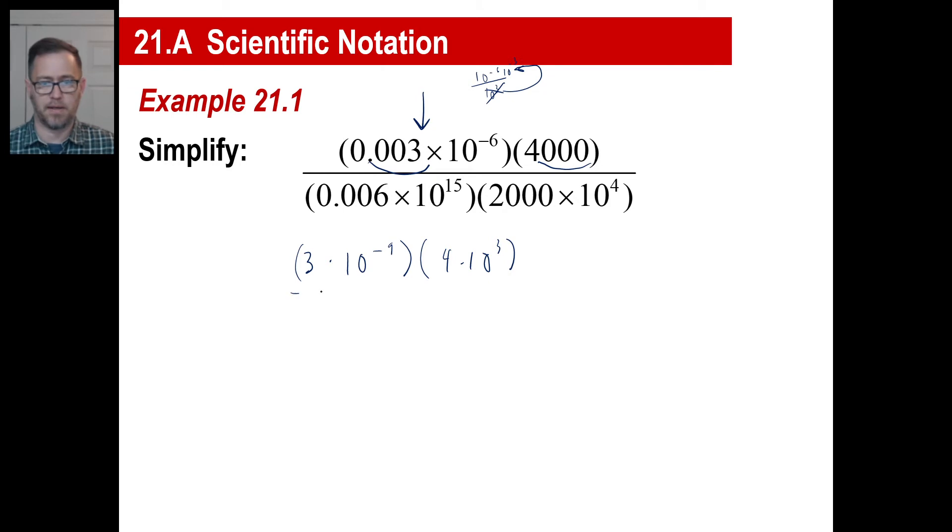Top right, 4,000, piece of cake, move it over three times. That's four times 10 to the third power. Let's look at the bottom ones. Over three times again, that'll be six times 10 to the, and we're gonna subtract three from 15. That'll be 10 to the 12th power. Bottom right, 2,000, yoink, three times. That's gonna be two. And since we divided by 1,000, we're gonna multiply this part by 1,000, or 10 to the third. 10 to the fourth times 10 to the third is 10 to the seventh.